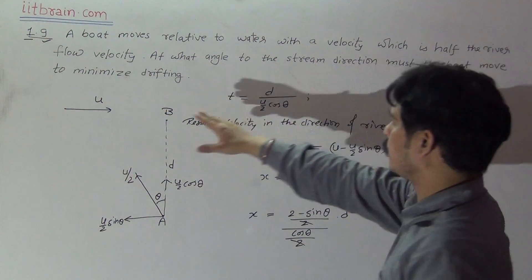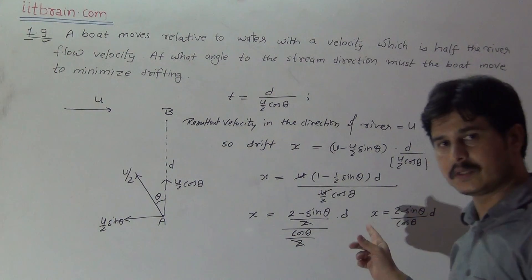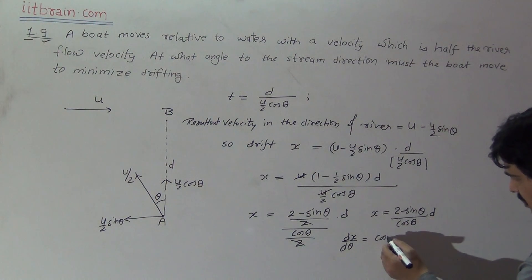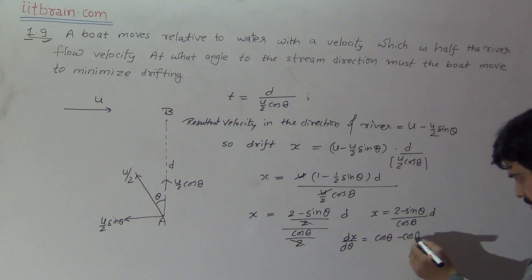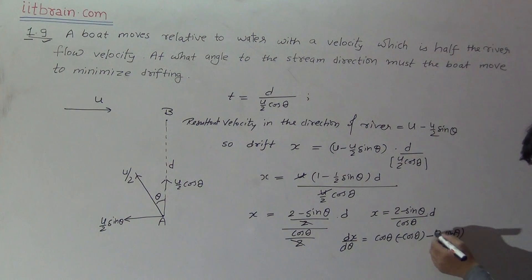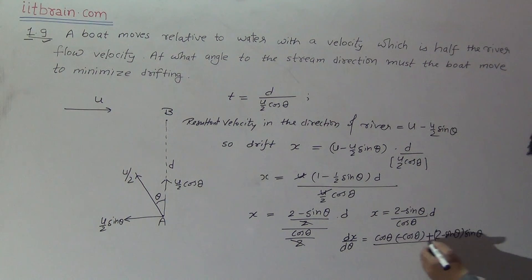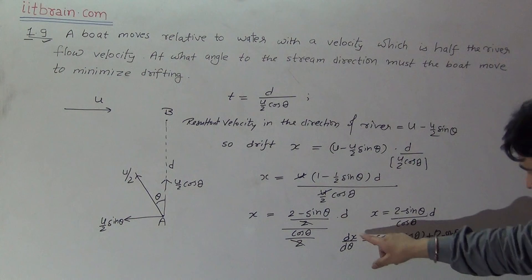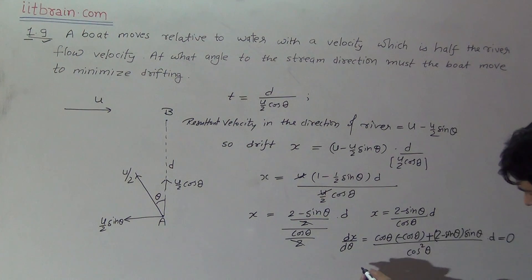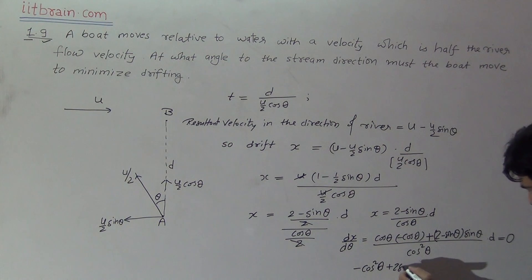We have to find the value of theta for which x is minimum. Differentiating x with respect to theta: dx/dθ = [cosθ × (−cosθ) − (2 − sinθ)(−sinθ)] / cos²θ × d. The numerator expands to −cos²θ + 2sinθ − sin²θ. Setting dx/dθ equal to zero for the minimum: −cos²θ + 2sinθ − sin²θ = 0.